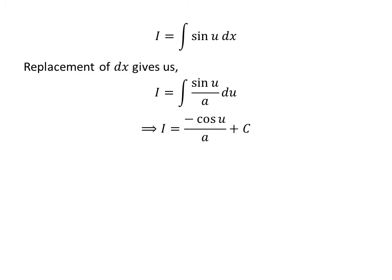This is a simple integration. 1 over a is a constant. The integration of sine of u is minus cosine of u. So I equals minus cosine of u over a plus C. C is the arbitrary constant of indefinite integral. Never forget to add this constant.